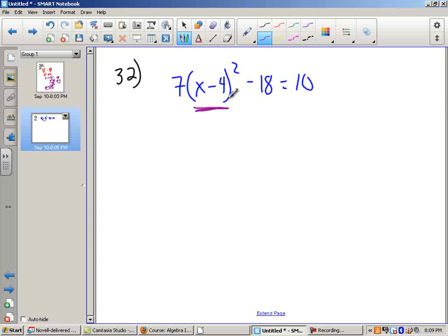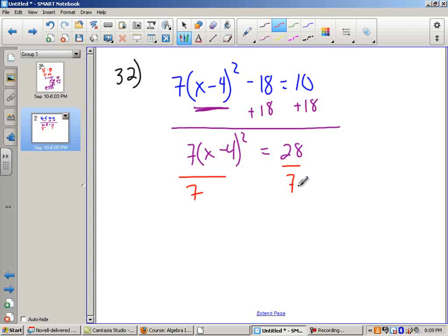And since this whole chunk is squared, we're going to treat it like what I've been getting alone before. So I want to get this parenthesis alone. I'll start by moving the 18, so plus 18 to both sides. I end up with 7 times X minus 4 squared equals 28. Again, I want to get this piece alone, so I'm going to divide both sides by 7. And that works out nicely. I get X minus 4 quantity squared equals 4.